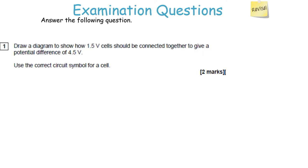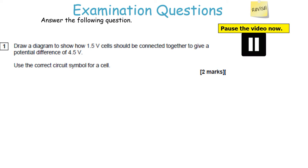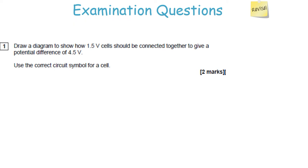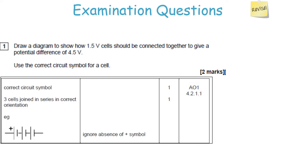Draw a diagram to show how 1.5-volt cells should be connected together to give a potential difference of 4.5 volts, using the correct circuit symbol. The correct circuit symbol for a cell is one long line and one short line. Place three cells in series, because when things are in series the potential differences add: 1.5 plus 1.5 plus 1.5 equals 4.5 volts.